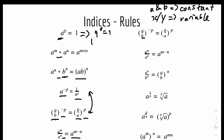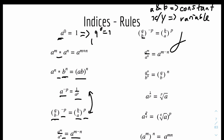Moving on, the next rule is: A to the power of N divided by B to the power of N. Notice the powers are both N — the same. So the power N can be grouped outside the bracket, giving (A over B) to the power of N. For example, 9 to the power of 3 divided by 8 to the power of 3 equals (9 over 8) to the power of 3, or cubed.